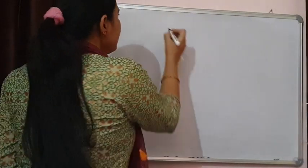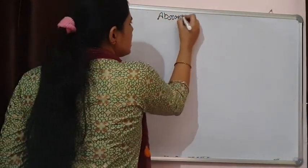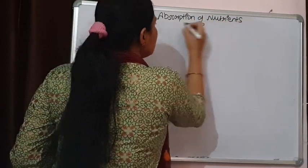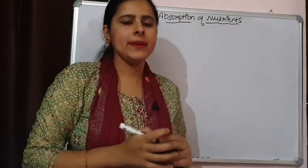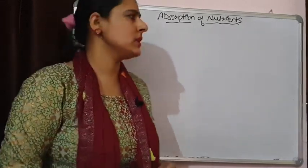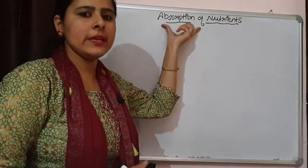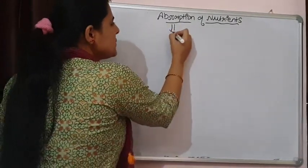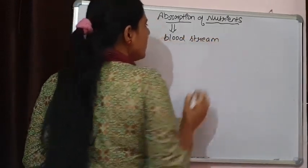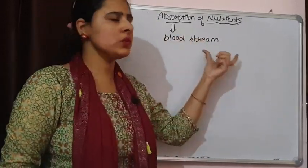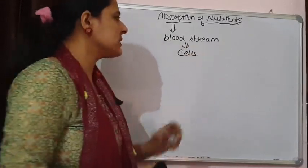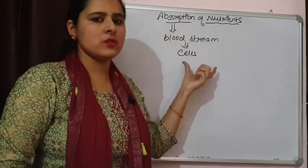Good morning students. Today I am discussing about the absorption of nutrients. Earlier we talked about digestion — basically what happened in digestion was that all the complex food particles were converted into simple soluble food particles. Now the process of absorption takes place. Absorption means these simple soluble food particles will be transferred into the bloodstream, absorbed from the intestine or alimentary canal into the bloodstream, and then provided to cells for utilization.